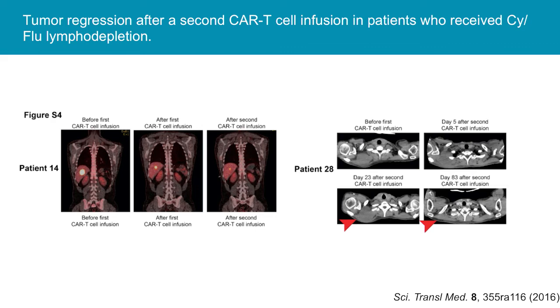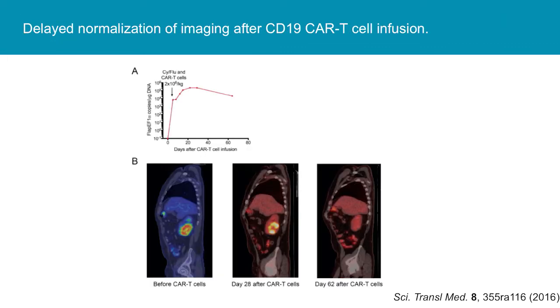A cautionary tale: after CAR T cell infusion in diffuse large B cell lymphoma patients, a PET is typically obtained by day 30 and a response is expected, but occasionally there can be delayed responses. This patient had delayed normalization of his PET scan not apparent until day 60, though he did have CAR T cell persistence — which often mirrors clinical response. Unfortunately, CAR T cell quantification via PCR is not available clinically and only on a research basis.